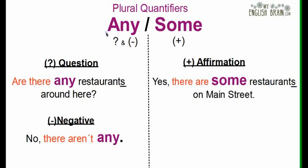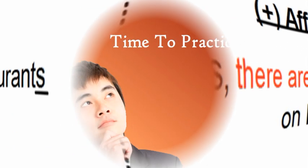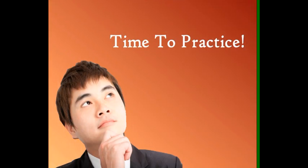Remember, 'any' is a plural quantifier used in questions and negatives, and 'some' is the plural quantifier for affirmations or positive forms. Very good — now it's time to practice!